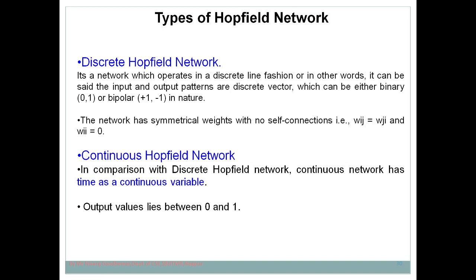The continuous Hopfield network is the opposite of the discrete Hopfield network. In the continuous Hopfield network, the output variable is continuous in nature. Unlike the discrete Hopfield network where the output is zero or one, or minus one or plus one, in the continuous Hopfield network the output value lies between zero and one. The value can be 0.1, 0.2, 0.253, and so on — it is continuous in nature.